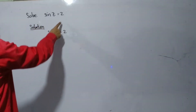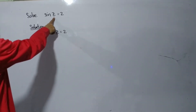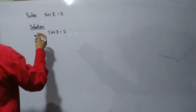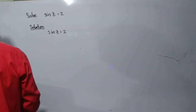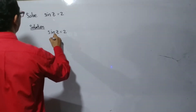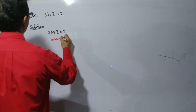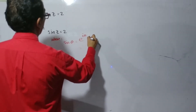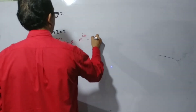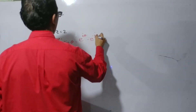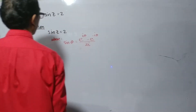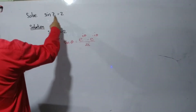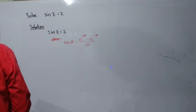Solve sine z equals 2. As you notice, z here is your theta. Remember our formula for sine z: e to the i-theta minus e to the negative i-theta, all over 2i. Now substitute values.